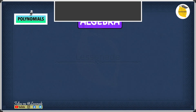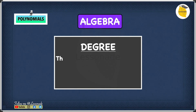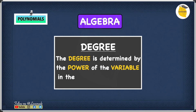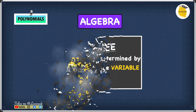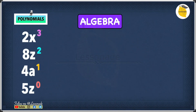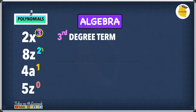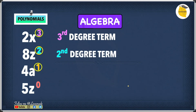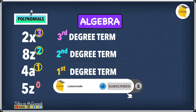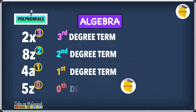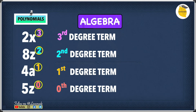Let's look at something really important in polynomials: the degree. The degree is determined by the power of the variable in the term. For example: 2x to the power of 3 is a third degree term; 8z to the power of 2 is a second degree term; 4a to the power of 1 is a first degree term. And 5z to the power of 0 is not called a 0th degree term — it's called a constant term.